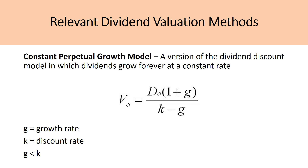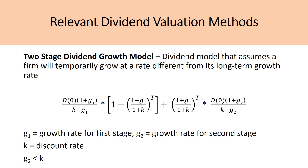For a lot of students, they'll be covering the dividend valuation models used to value a stock. For this video, I'll be referring to the constant perpetual growth model — a version of the dividend discount model in which dividends grow forever at a constant rate — and the two-stage dividend growth model, which assumes a firm will temporarily grow at a rate different from its long-term growth rate. While I've already made a video covering these formulas, an important consideration I excluded was the growth rate variables used in the formula.